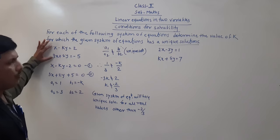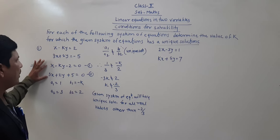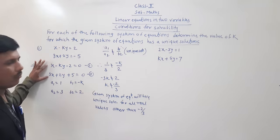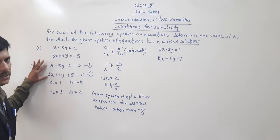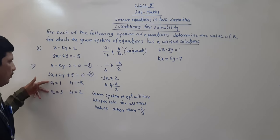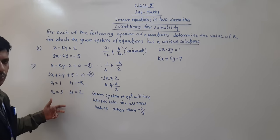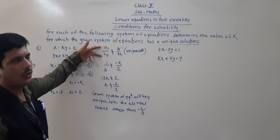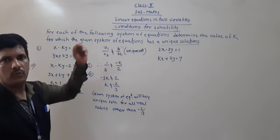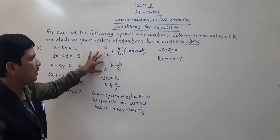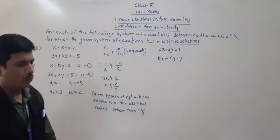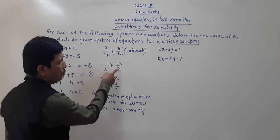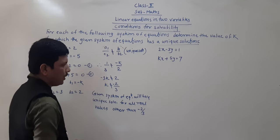What we have done: for the two equations, we wrote them in proper form a1x plus b1y plus c1. We identified a1, a2, b1, b2. Only these values are required because we know the ratio. When there is a unique solution, a1 by a2 is not equal to b1 by b2. So 1 by 3 is not equal to minus k by 2. By cross multiplication, k is not equal to minus 2 by 3.